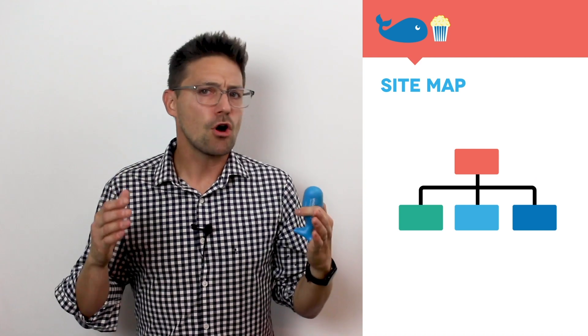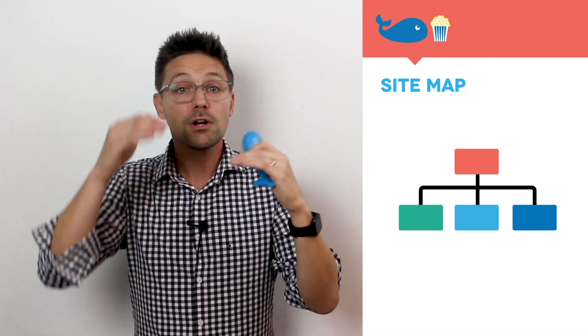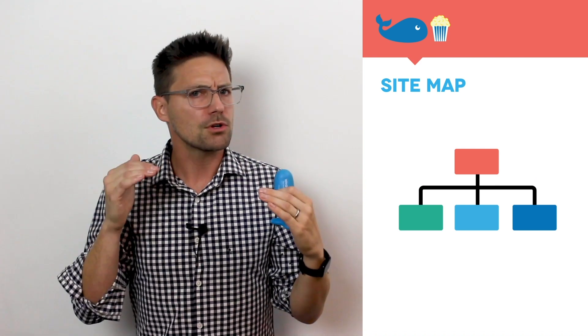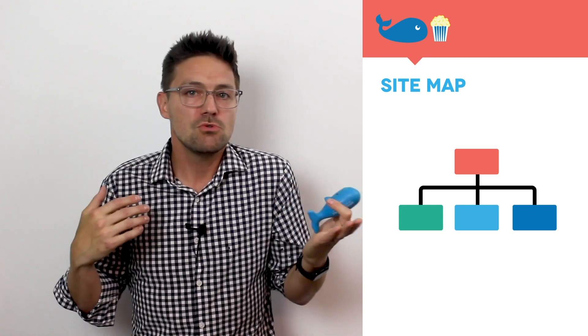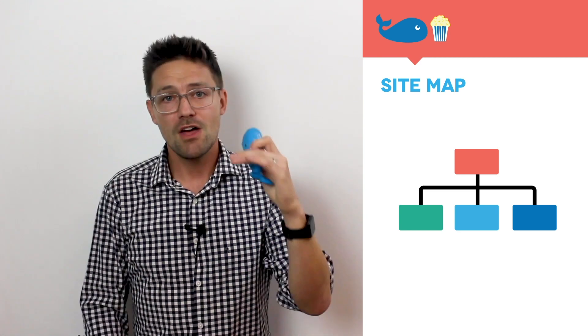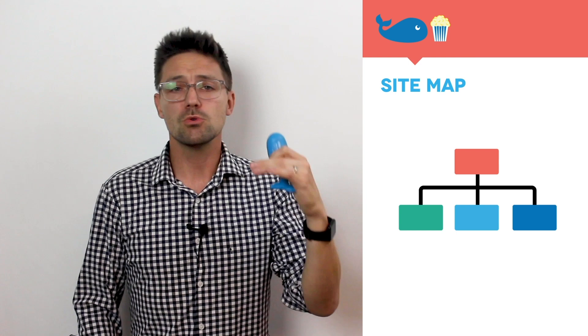Site map. It's an outline of all the pages on a website organized in hierarchical order, much like the outlines you used to for your college term papers. Then submitted to the Google search console.